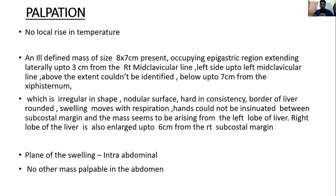Left side up to the left mid-clavicular line. The superior border could not be identified. Inferiorly, extending up to 7 cm from the xiphisternum. The mass is irregular in shape, nodular surface, hard in consistency. The border of the liver is rounded. The swelling moves with respiration. Fingers could not be insinuated between the subcostal margin and the mass, which seems to be arising from the left lobe of the liver.